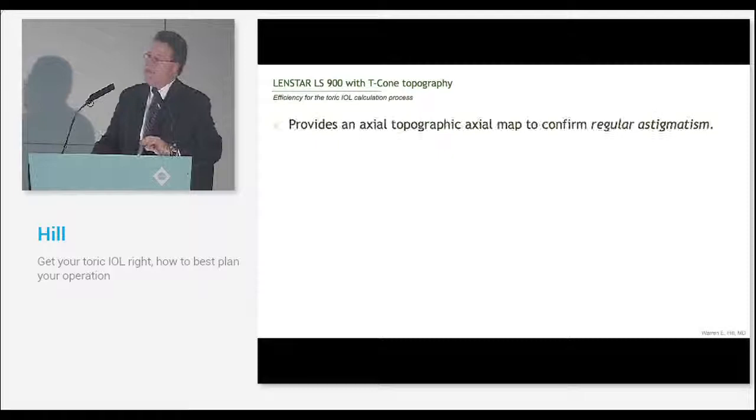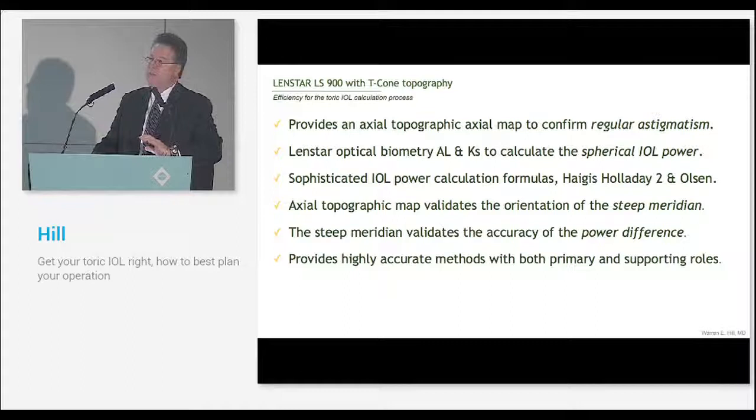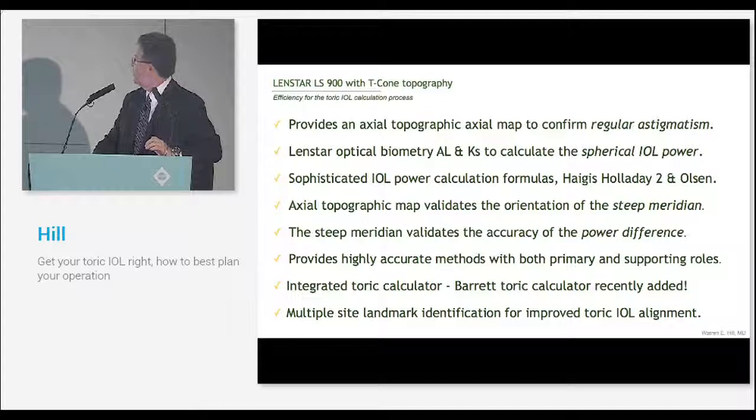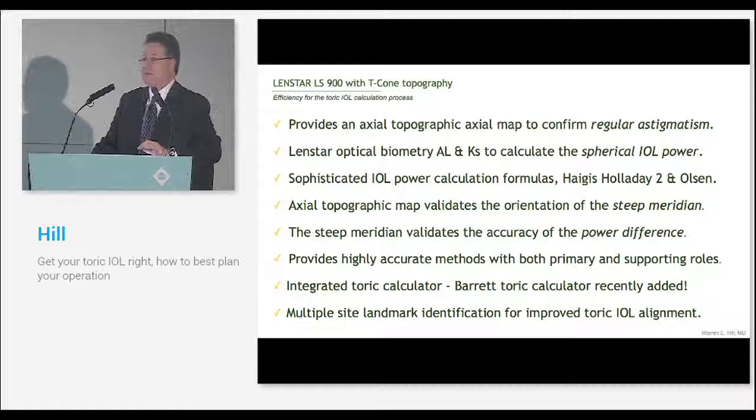In summary, the LenStar with the T-Cone provides a confirmatory axial map for the things that we really need to have. Manually determine the steep meridian and the power difference between meridians. The biometer itself gives magnificent axial length and all the other axial measurements as well as the Ks to calculate the spherical power. The LenStar has very sophisticated formulas. It has access to the Holladay 2 formula via an HTML bridge from Dr. Holladay's software. And soon the Barrett formula will be added as well. We have an axial map that validates the steep meridian and then the power difference between. This is the most accurate way to do it. This is the way we've been doing it for quite a while. And we've stopped having big surprises.